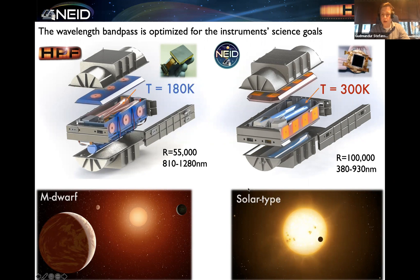NEID operates in the optical from around 380 to 930 nanometers at a resolution of about 100,000. Because we're using a 9K by 9K CCD chip, we don't actually have to cool down the instrument, and we operate at a slightly elevated room temperature of around 300 Kelvin. The precision level of HPF is about one meter per second, and with NEID, which we're finishing commissioning, we're hoping to get around 30 centimeters per second radial velocity precision.